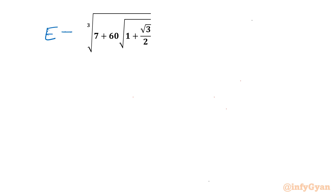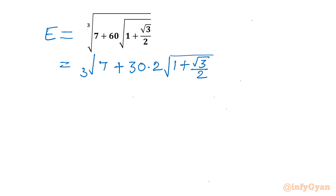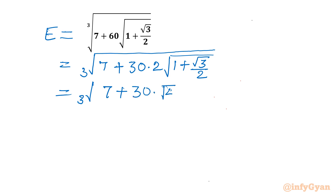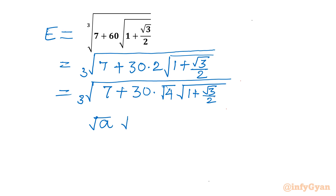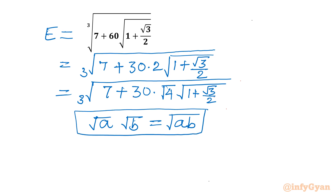Let's call this given expression E. We can write cube root of 7 plus 60, where 60 can be written as 30 times 2, and then 1 plus root 3 over 2. Now I can write cube root of 7 plus 30 times, where 2 can be written as square root of 4, times square root of 1 plus root 3 over 2. Applying the property square root a times square root b equals square root ab, we get cube root of 7 plus 30 times square root of 4 times (1 plus root 3 over 2).